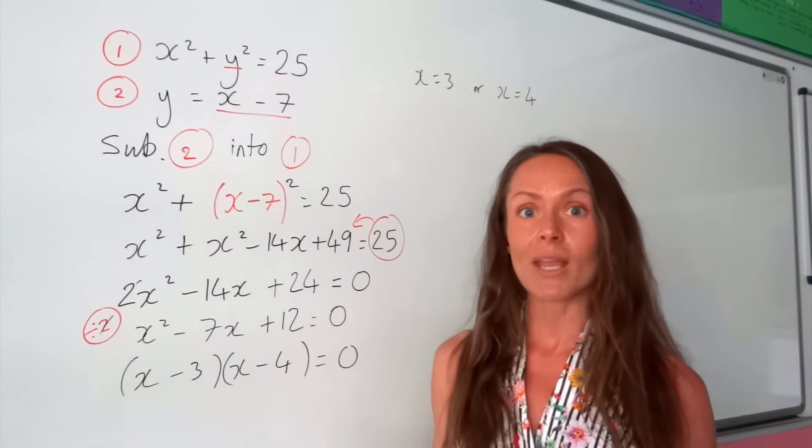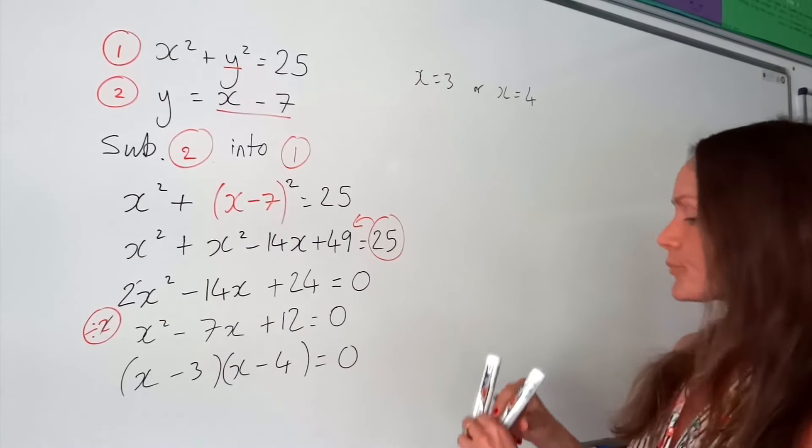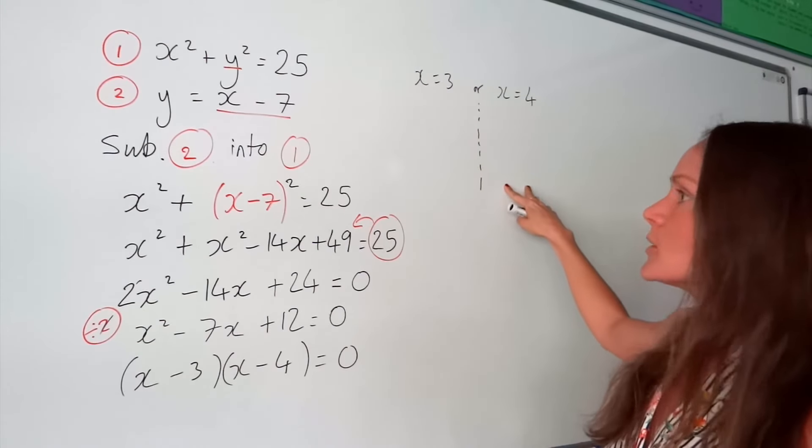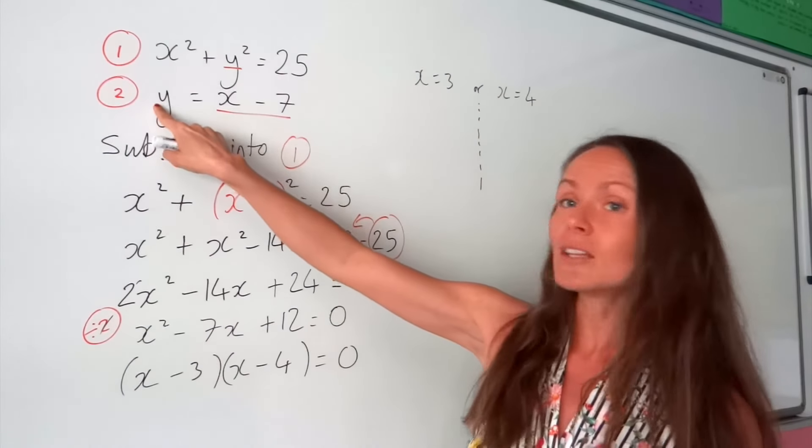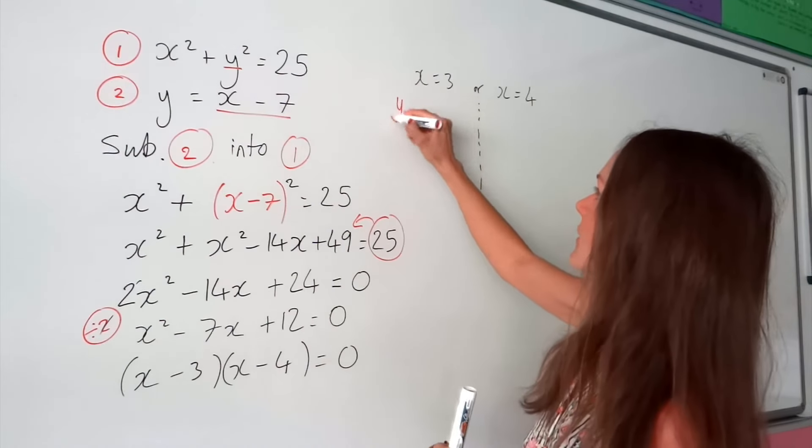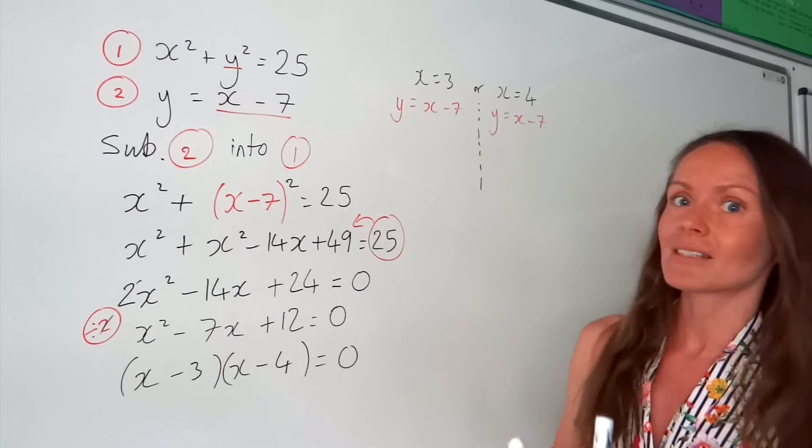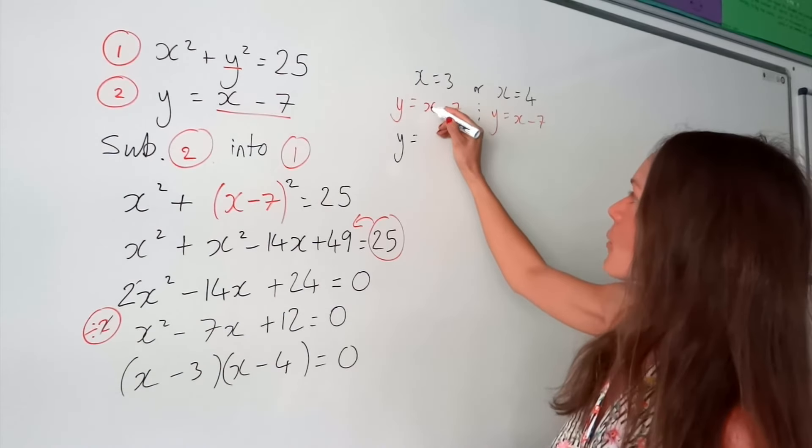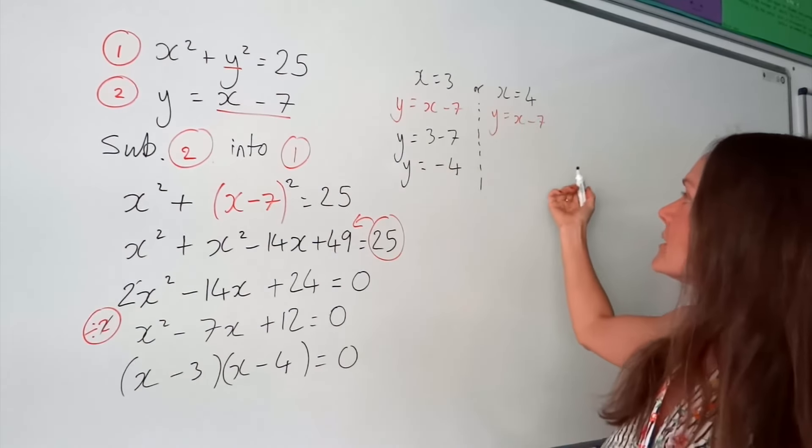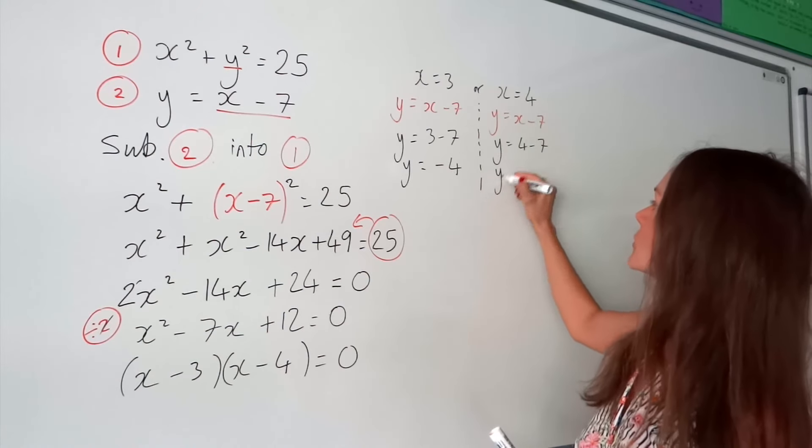So we've got our two values of x. But remember, when you're solving simultaneous equations, you have to find both the value of x and the value of y. So we need to do that as well. I'm going to do it on the left-hand side here for when x is 3, and then afterwards for when x is 4. Because remember, to find the value of y, y is equal to the x value minus 7. So I'm just going to write that linear equation out again at the top. So in this one, x is 3, so I'm going to change x to 3. So to work out y, you must do 3 minus 7, which is negative 4. But on this side, we need to change the x value to 4, so it would be 4 minus 7, which is negative 3.